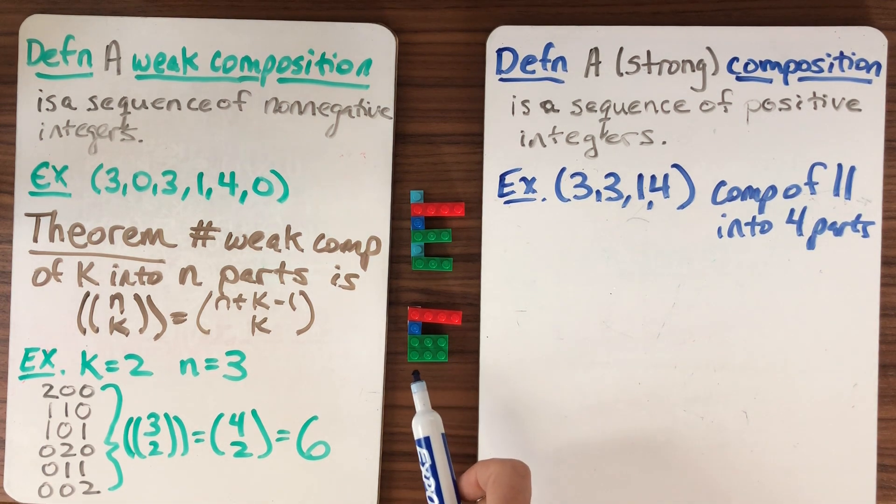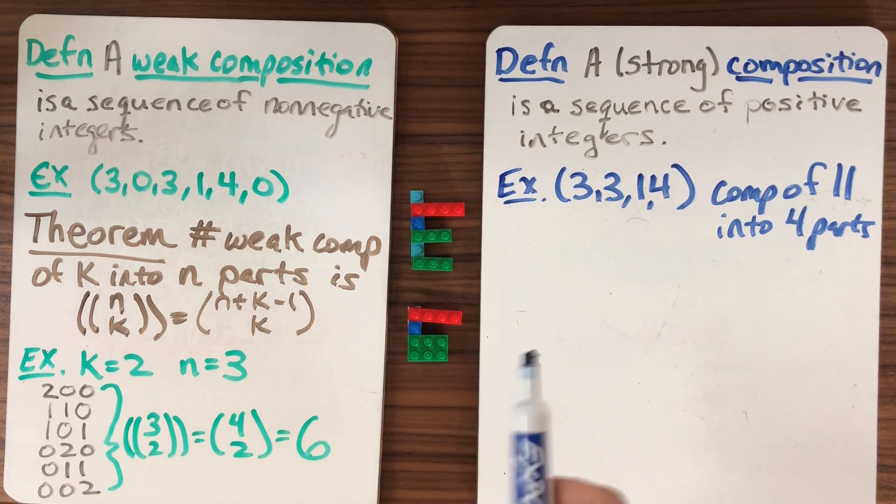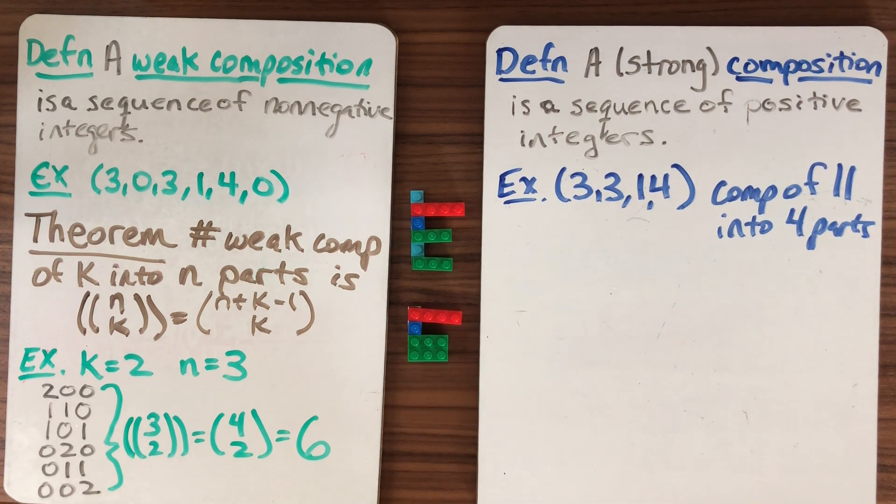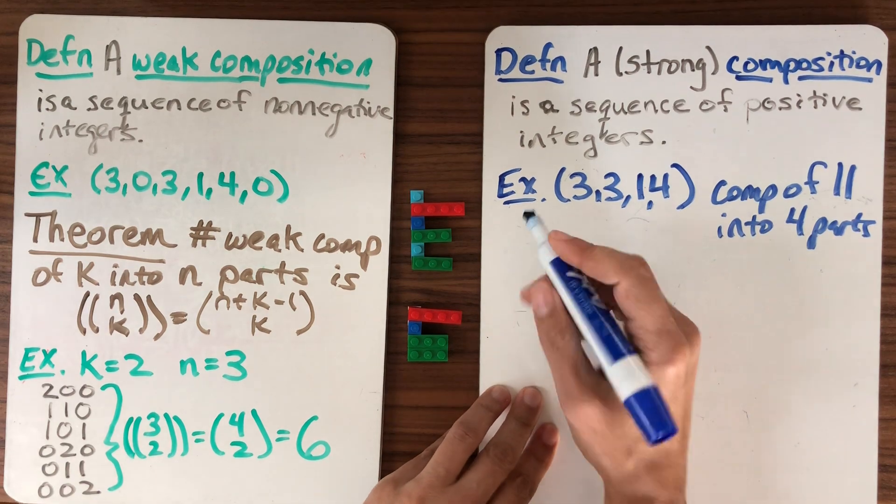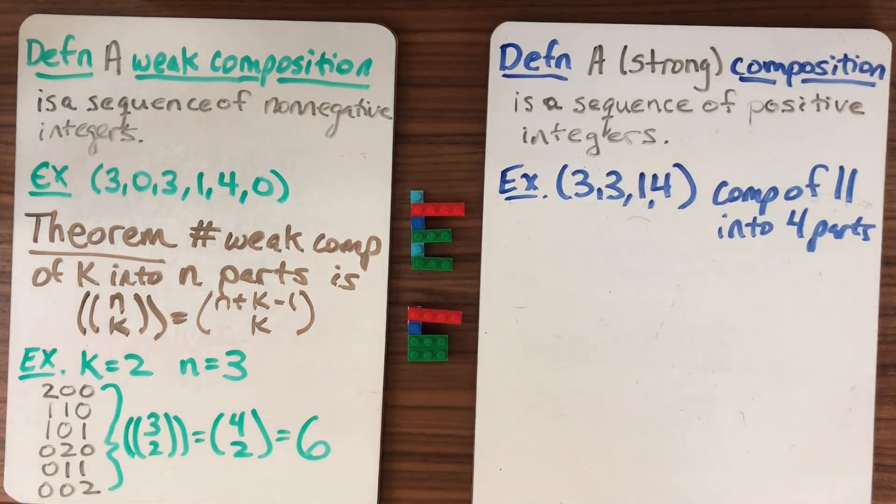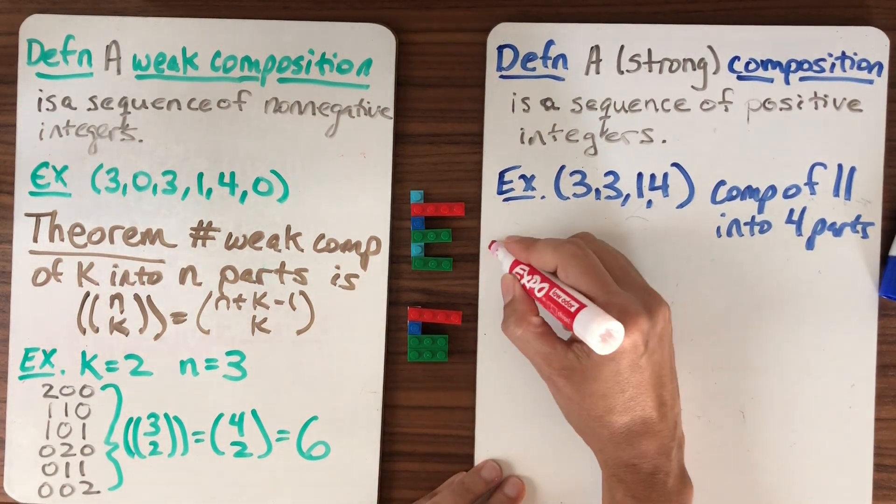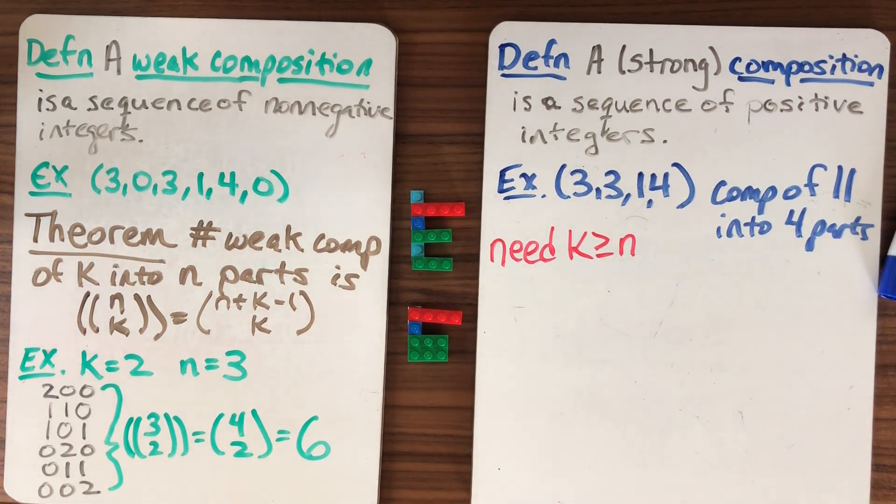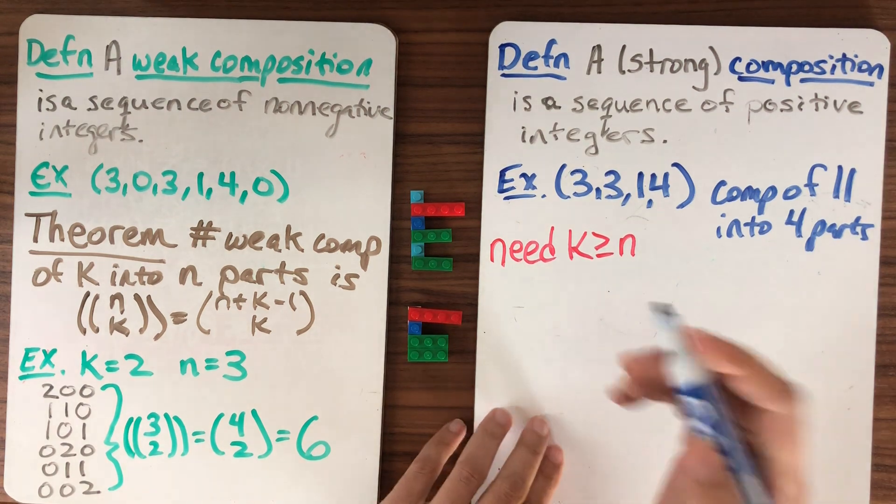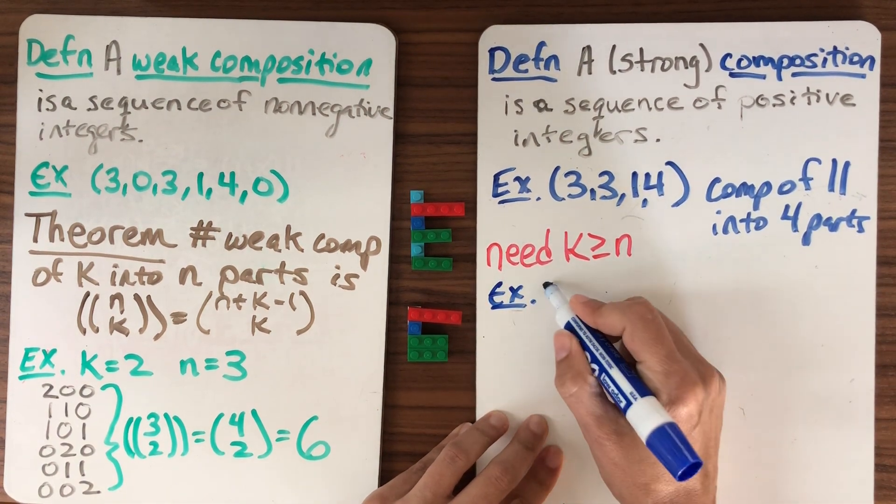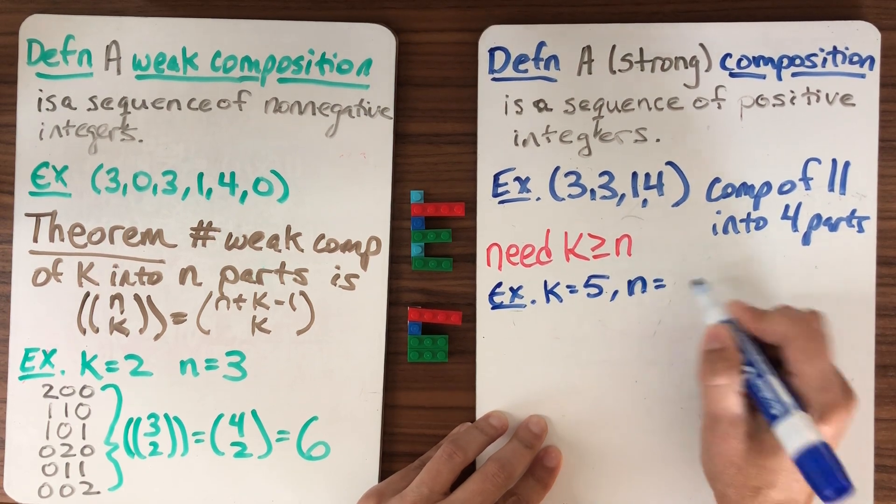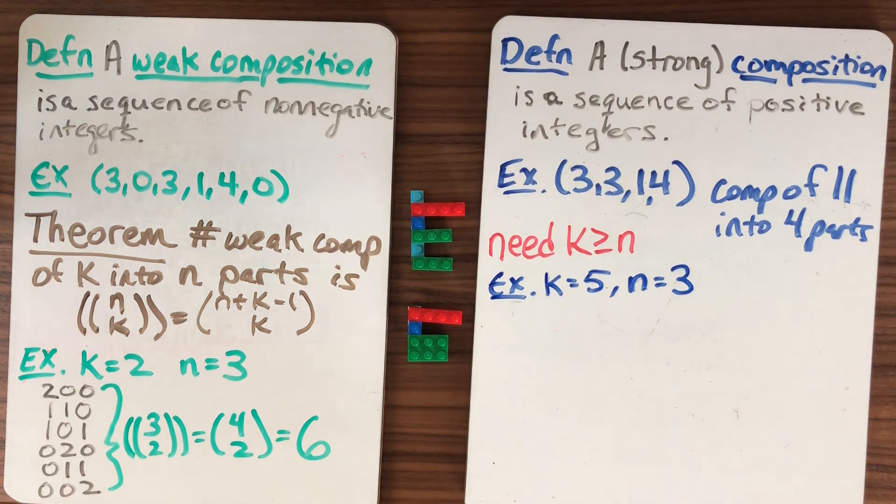So let's maybe do a bigger example and do an exhaustive example of compositions of k into n parts and see what we can come up with. Now here for the strong compositions, notice that if the number of studs that I have total, k, if it's less than n then I can't do it because I'm not allowed to skip spaces. I'm not allowed to have zero. So we need k at least as big as n in order to get anything. So let's do an example.